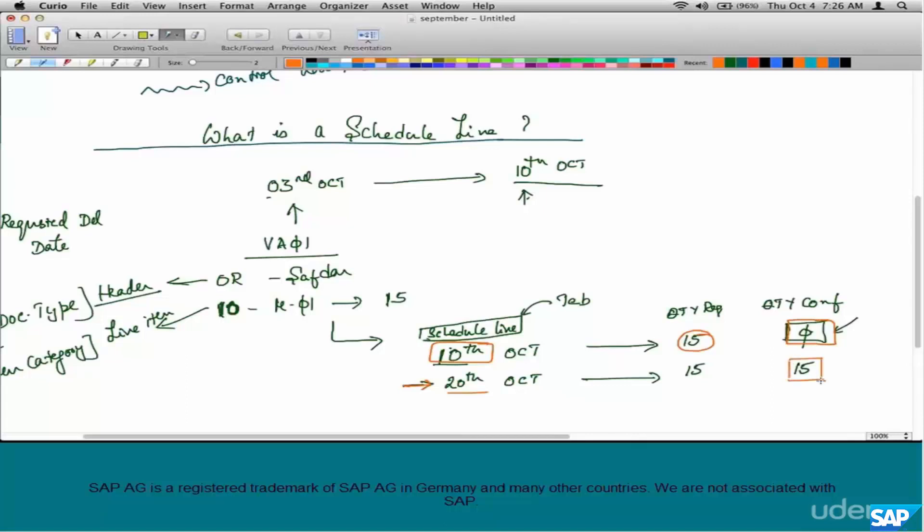So let's not worry about how we arrive at the 20th of October date that the system has confirmed the goods for. We would not be able to understand it until we cover the availability check and scheduling chapter like I discussed before. But for now, just understand the schedule line is where the confirmed quantity and the dates are available.